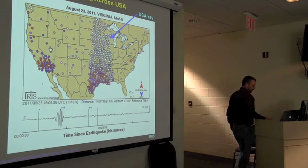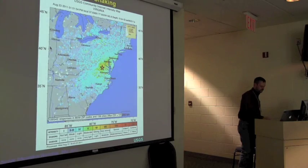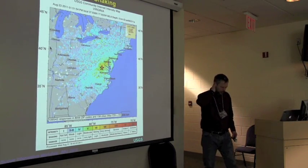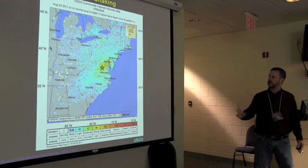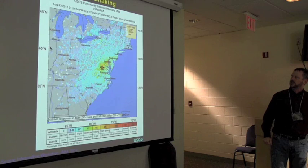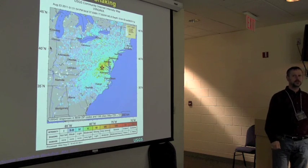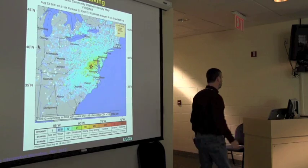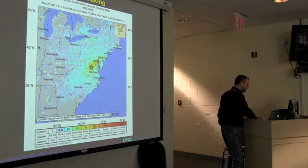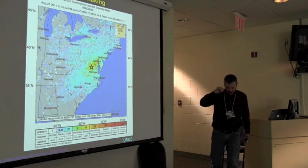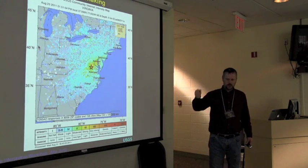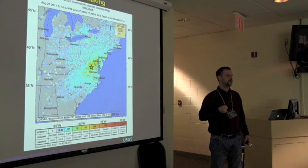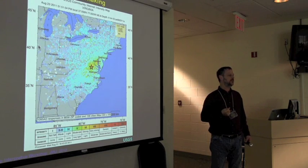The shaking was felt as far away as Canada to the north and Alabama to the south, from the coast to the Midwest. This is a plot of people who reported shaking to the USGS online. The USGS tells us this earthquake was actually felt by more people than any previous earthquake in the United States — not because it's the largest, but because it happened where the population centers are. This was the biggest earthquake in a century on the east coast.